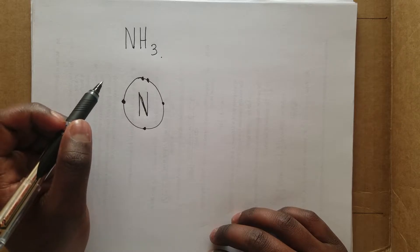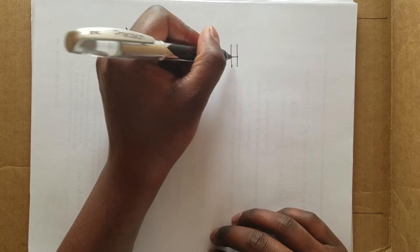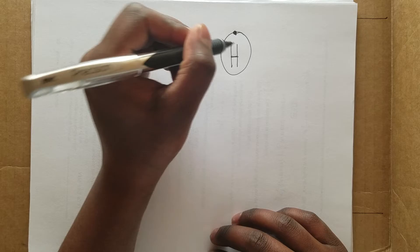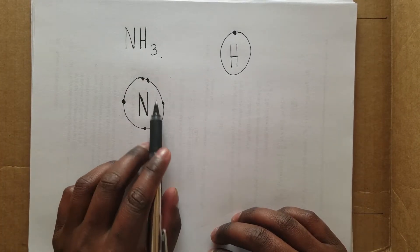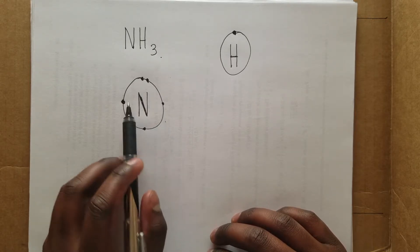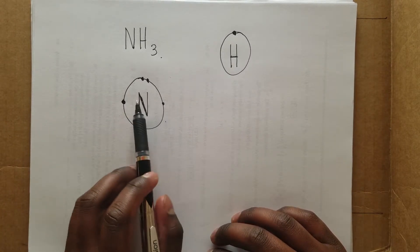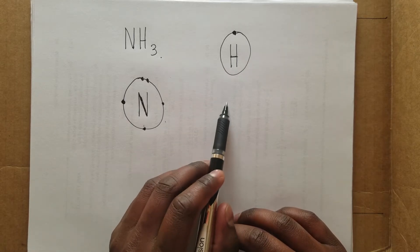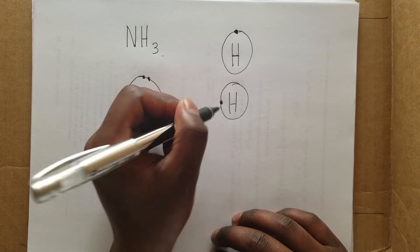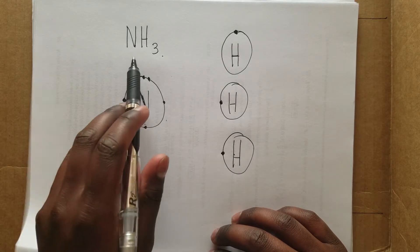Now, hydrogen has one electron in its outer shell only — it just exists as that. So if you put one hydrogen next to nitrogen, nitrogen would have six electrons — one two three four five six — but it needs eight to be stable. So doing the math: one hydrogen gives it six, another hydrogen gives it seven, and another hydrogen gives it eight. So if you take three hydrogen atoms and bond them with one nitrogen atom, you get a stable compound.